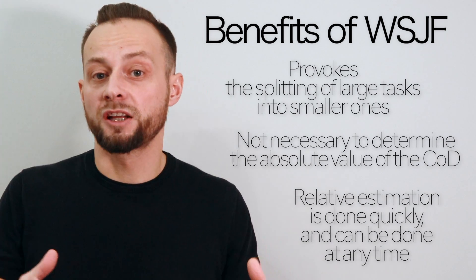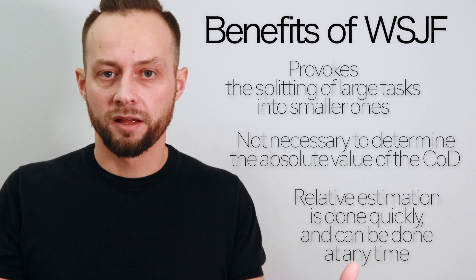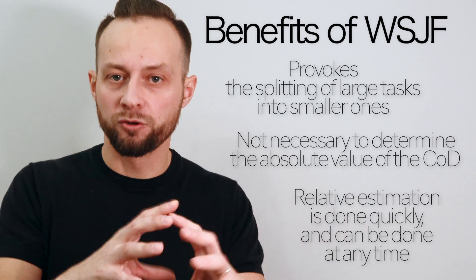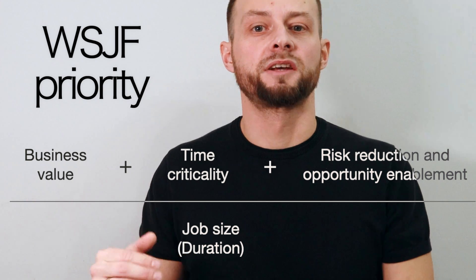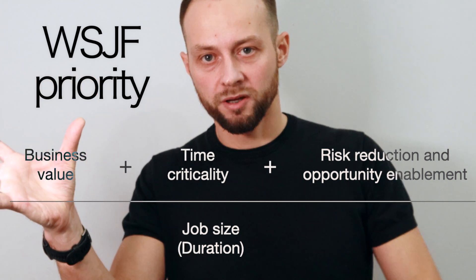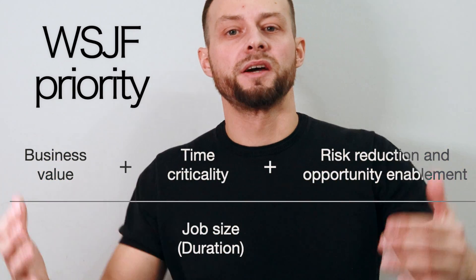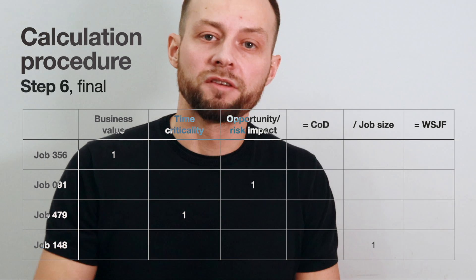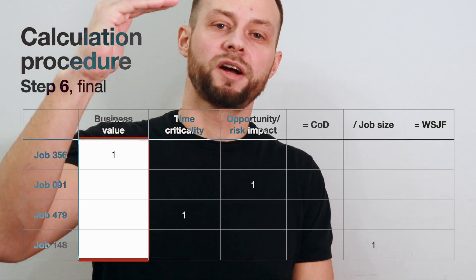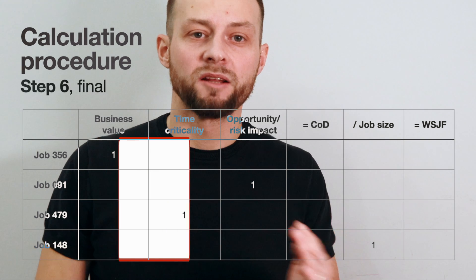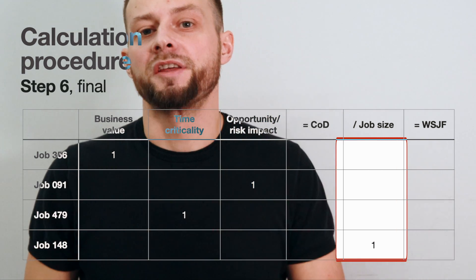Third, relative estimation is done quicker and can be done at any time — there is no need to wait for accurate estimates of each job. To summarize: WSJF priority is calculated as the sum of client and business value, time criticality, and risk reduction and opportunity enablement, divided by job size. Each of the four elements in the formula is calculated entirely for the whole list, one element after another, independently of the other elements.